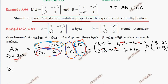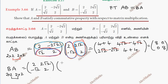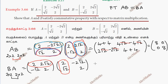Now let us compute BA. Take B with order 2 rows 2 columns and A with order 2 rows 2 columns — multiplication is possible. First copy the B matrix, then the A matrix. Multiply corresponding rows and columns.